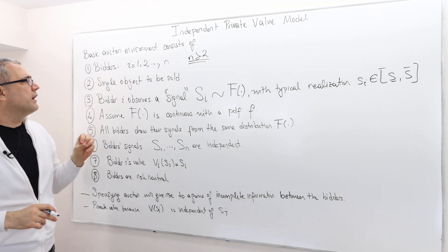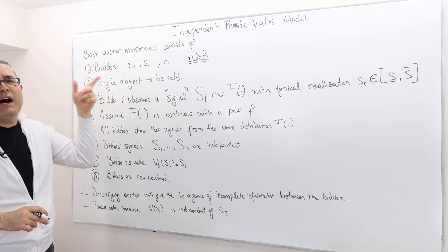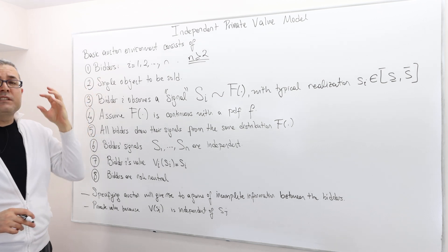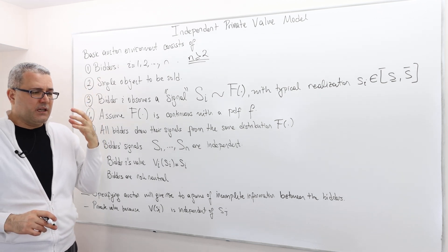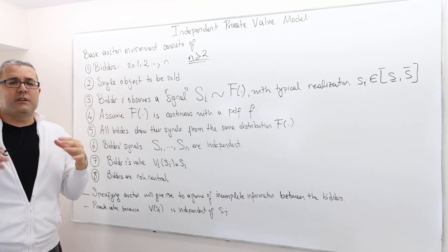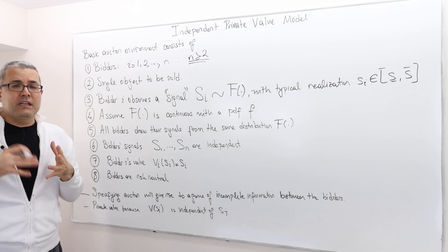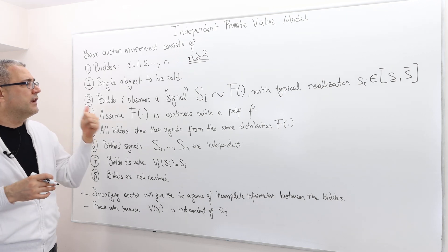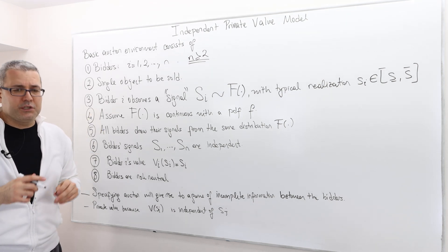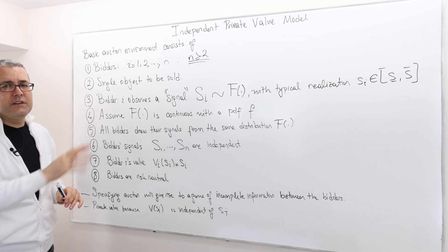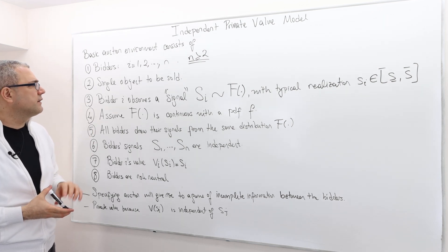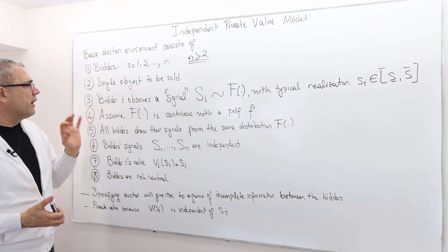So we're going to denote bidders by i. There's a single object that is auctioned. Multiple object auctions are significantly more complicated than single object auctions, and so here in this chapter we focus only on single object auctions.